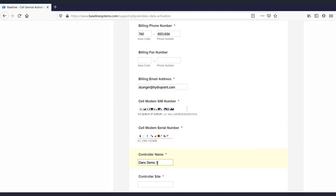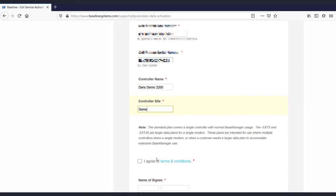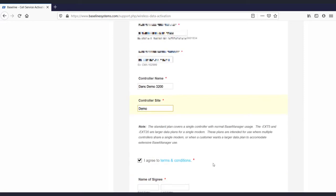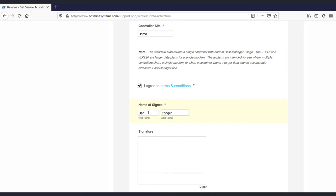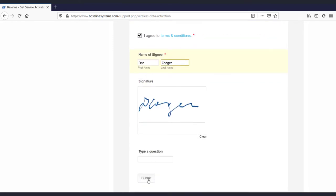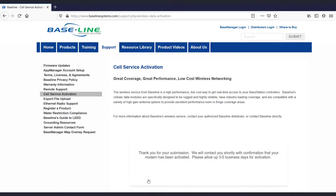Next, enter the controller name, the site name, and agree to the listed terms and conditions. Enter your name and use the mouse for some semblance of a signature. After submitting the form, allow a few days for the activation to be processed.